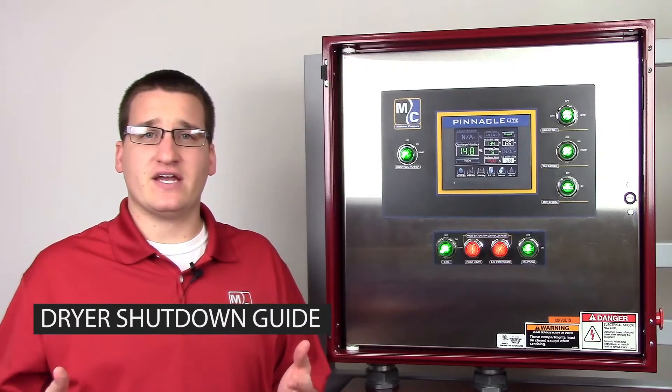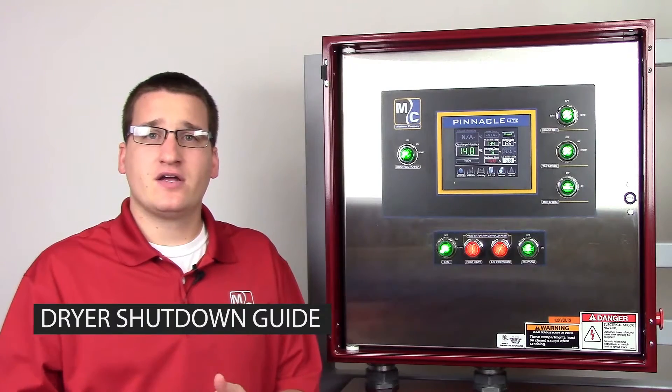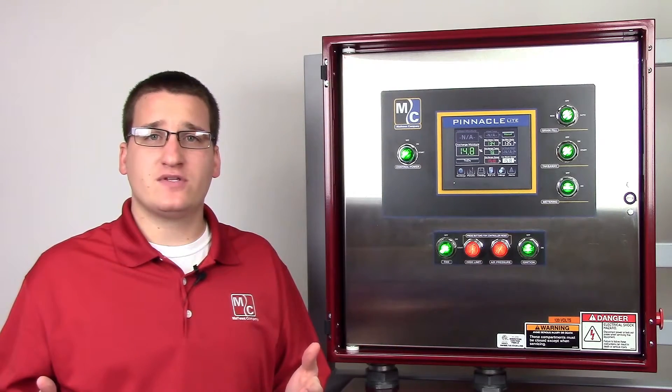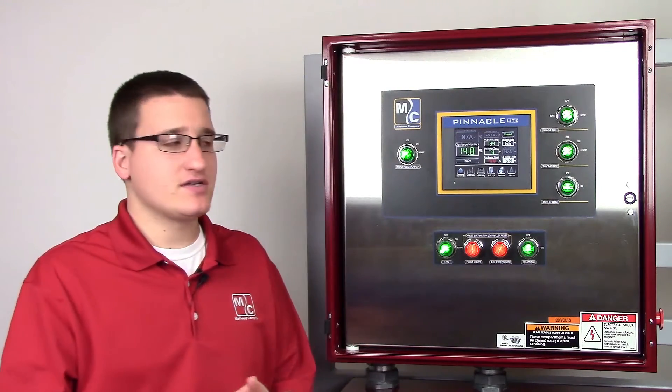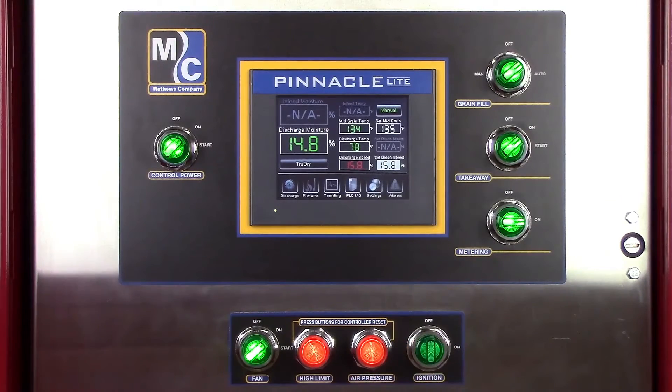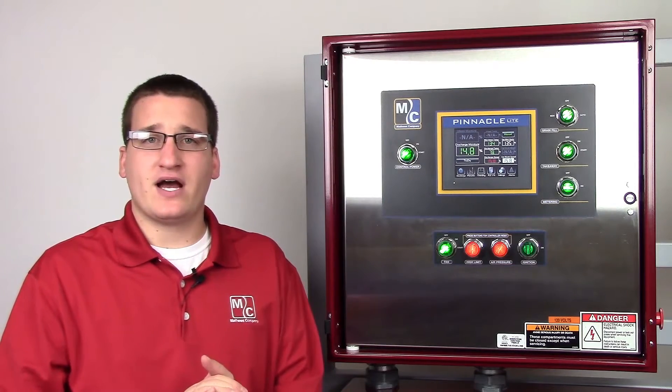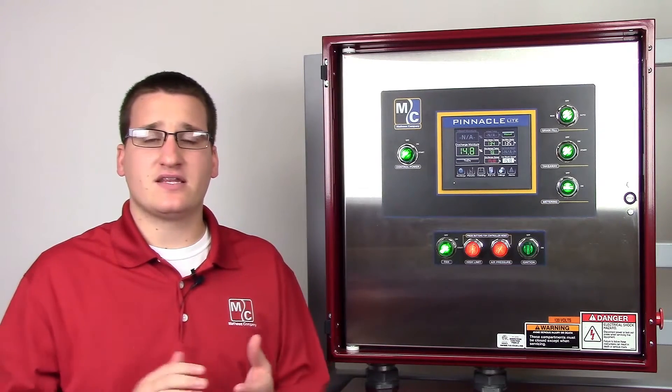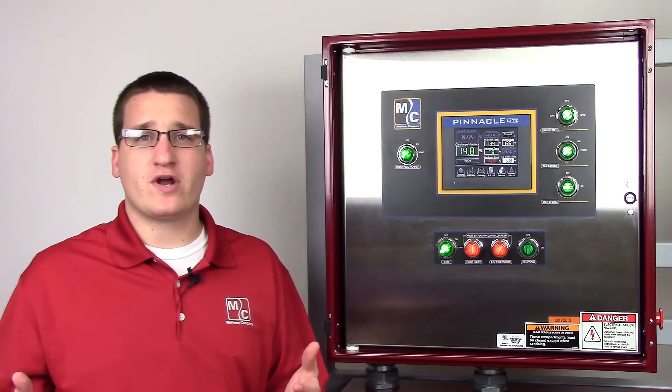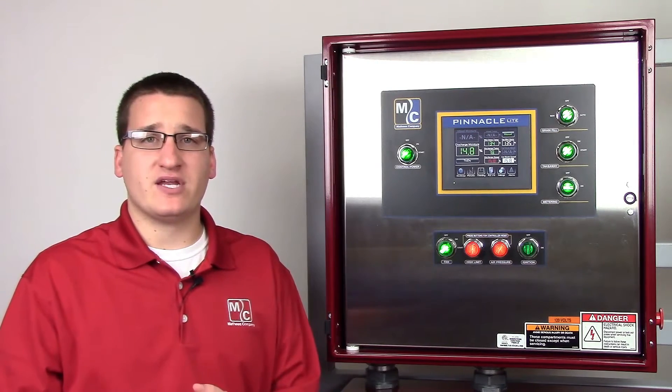When you're done drying for the day and it's time to shut down the dryer, you can begin the shutdown sequence by turning off your ignition. Some users like to leave the fan and the takeaway on for three to five minutes to let things cool off, but we don't recommend you do this for more than five minutes.